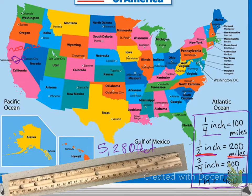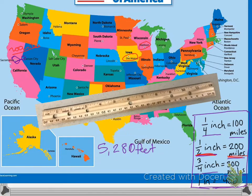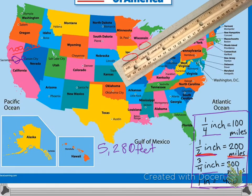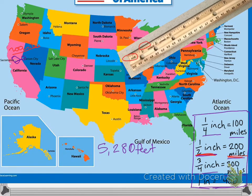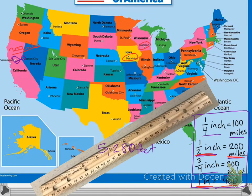Even though it doesn't look like it, because they're very close on the map. If I wanted to go from Des Moines, Iowa to Madison, Wisconsin, that distance is about one inch. We know that one inch equals 400 miles, so there it is — 400 miles between Des Moines, Iowa and Madison, Wisconsin.